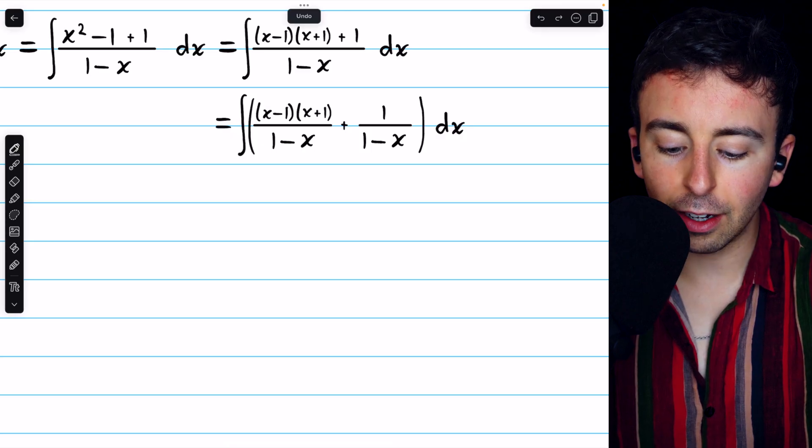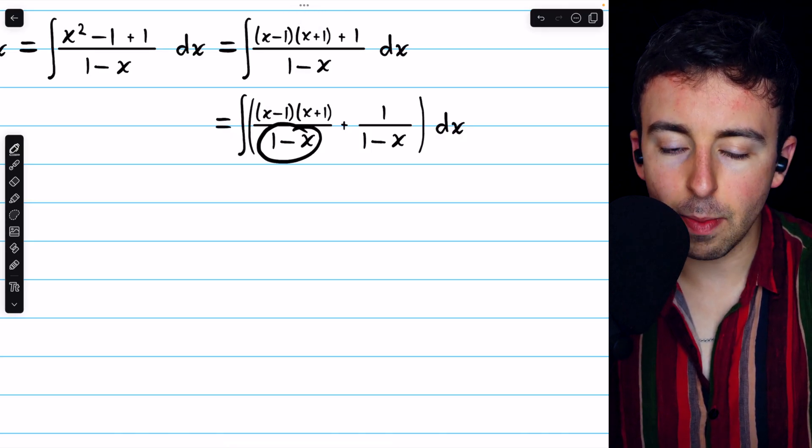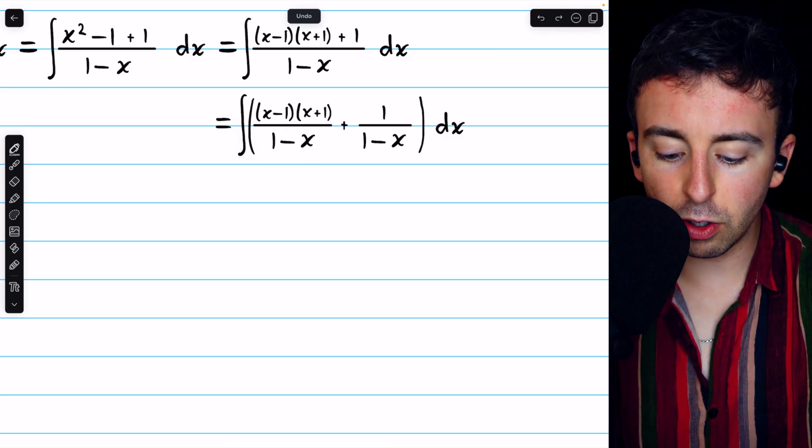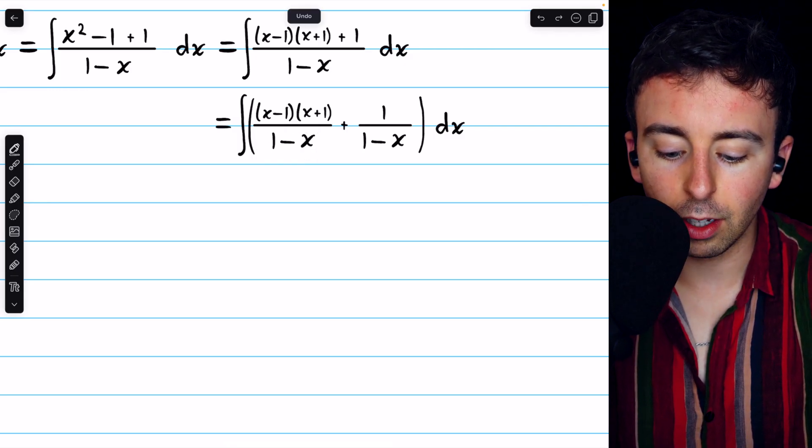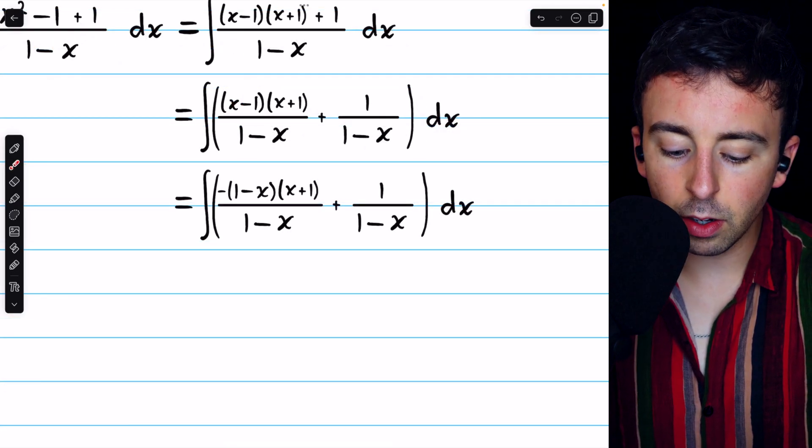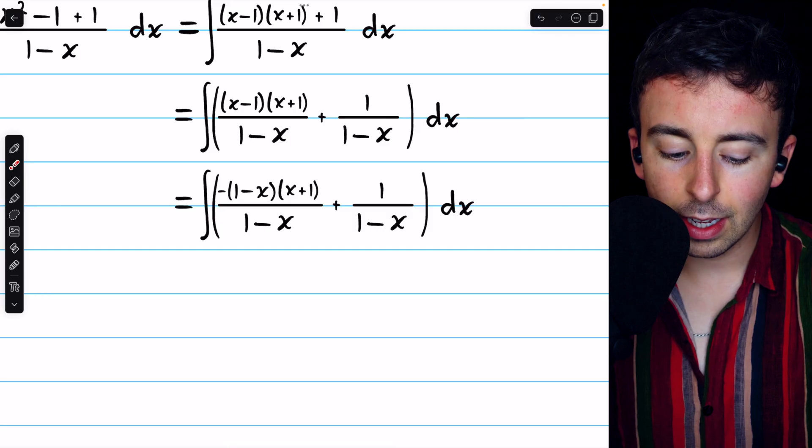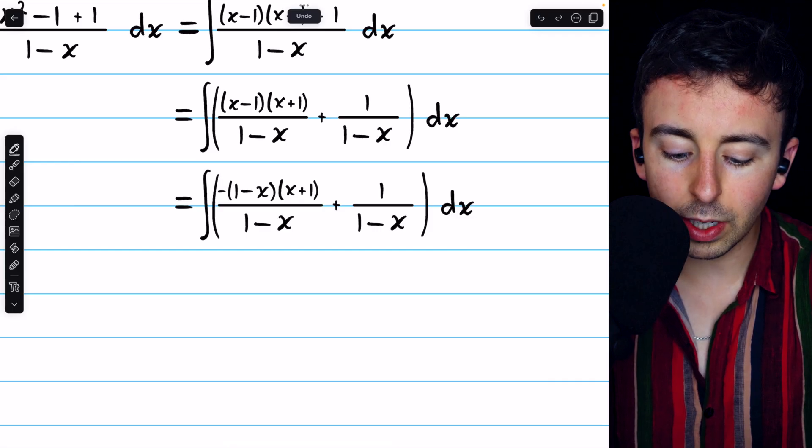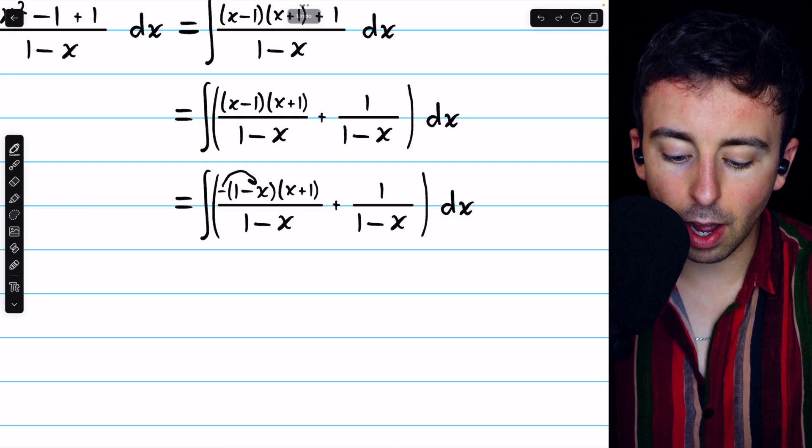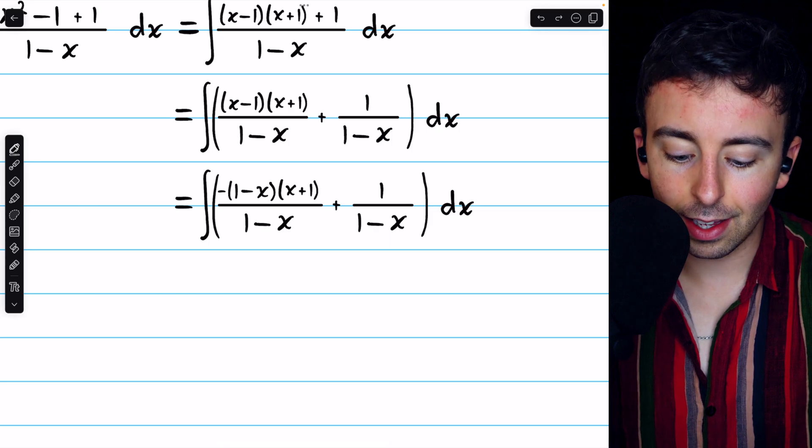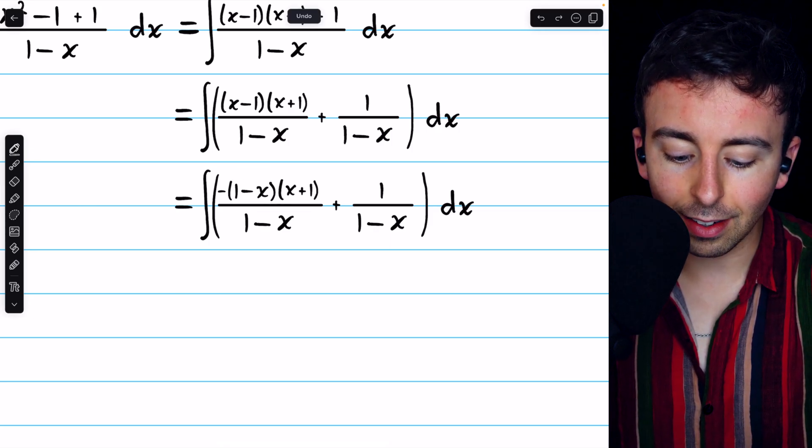This factor, x minus 1, doesn't exactly match 1 minus x, but it's just the negative of 1 minus x. So if we just pull a negative out of x minus 1, then the factors will match. So for x minus 1, we pull a negative out of it. Now you can see if we distributed this negative 1 back through, we would get a negative 1 and we would get a positive x. The reason we did that is now we have 1 minus x and 1 minus x, and we can cancel those.